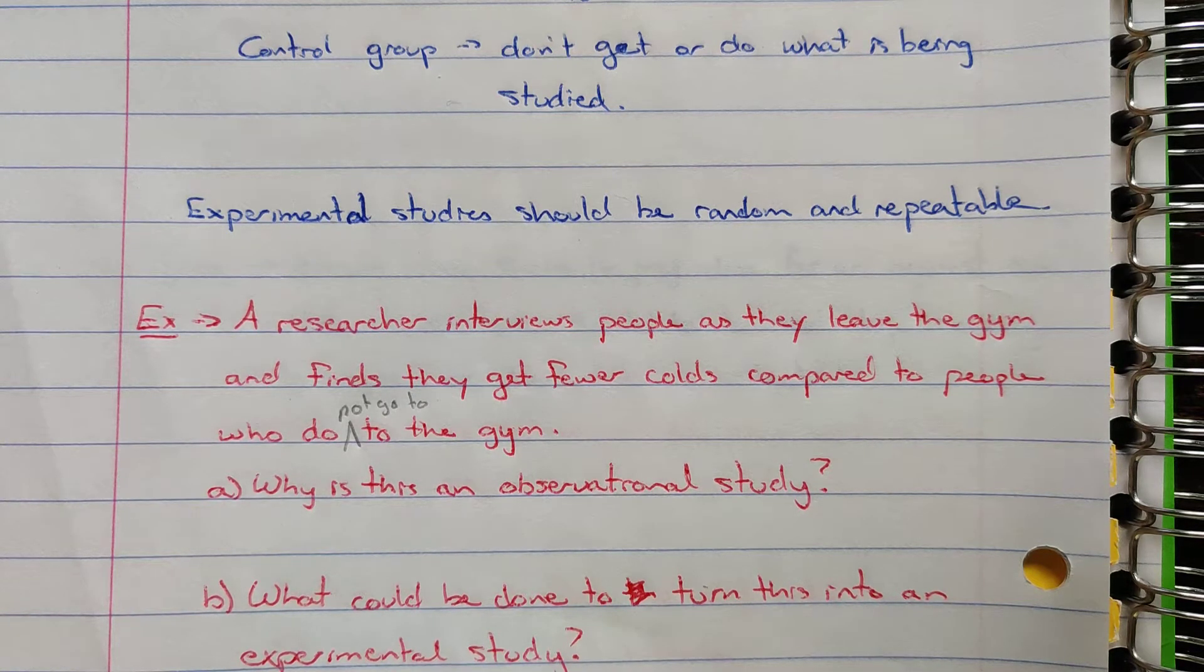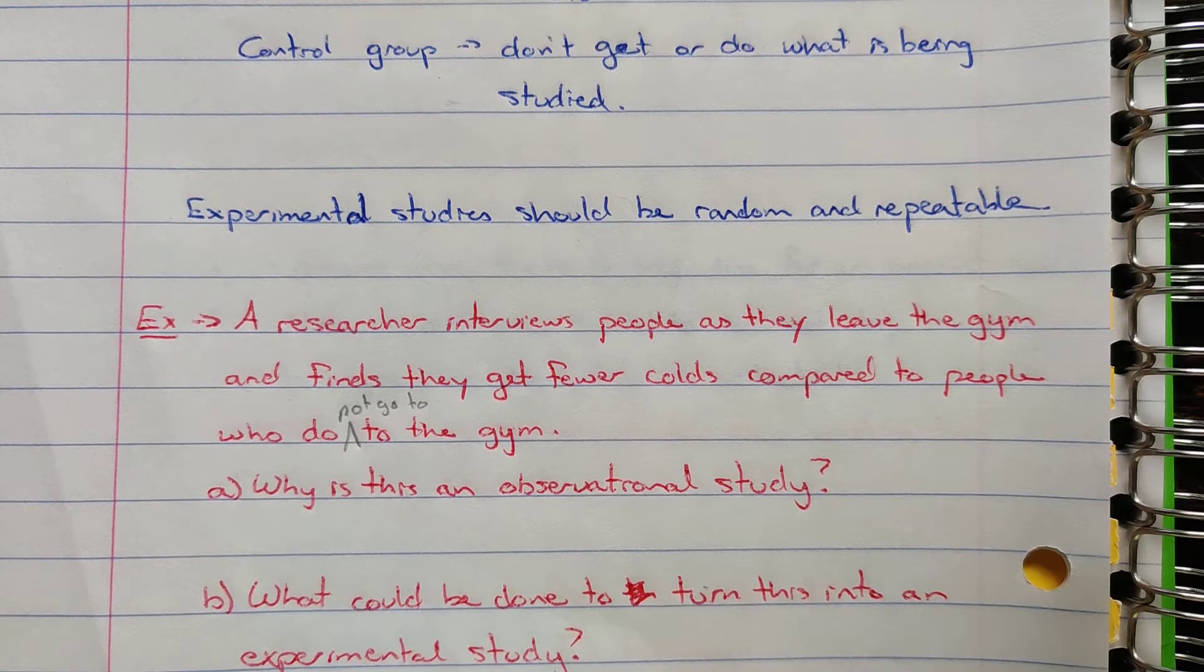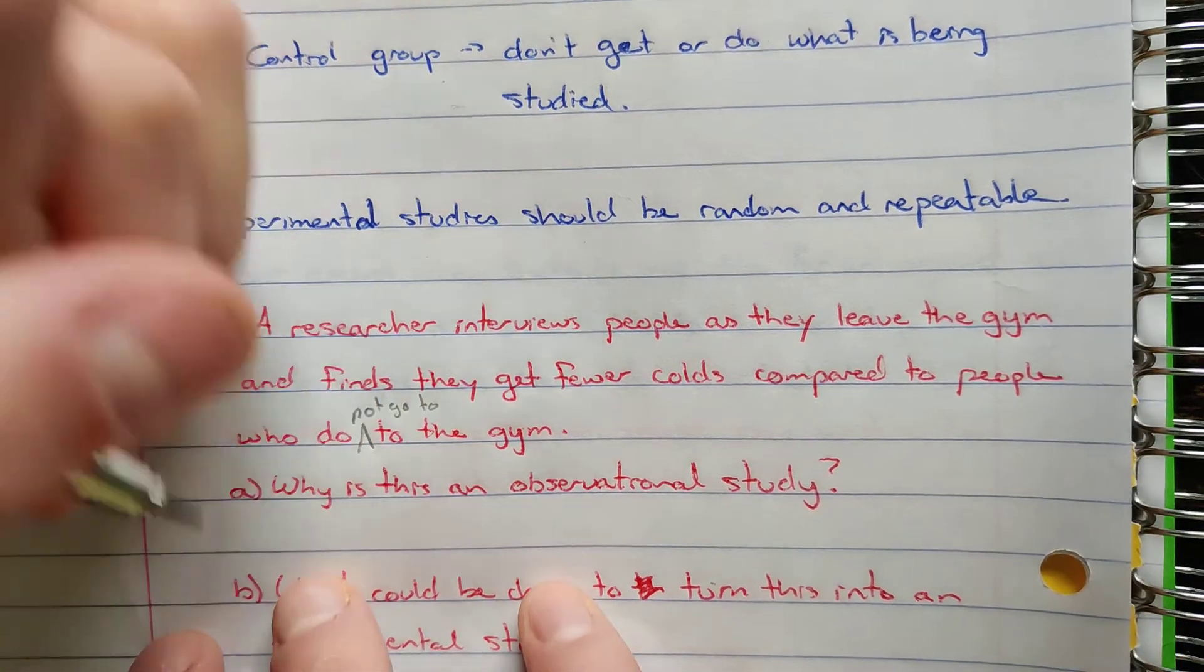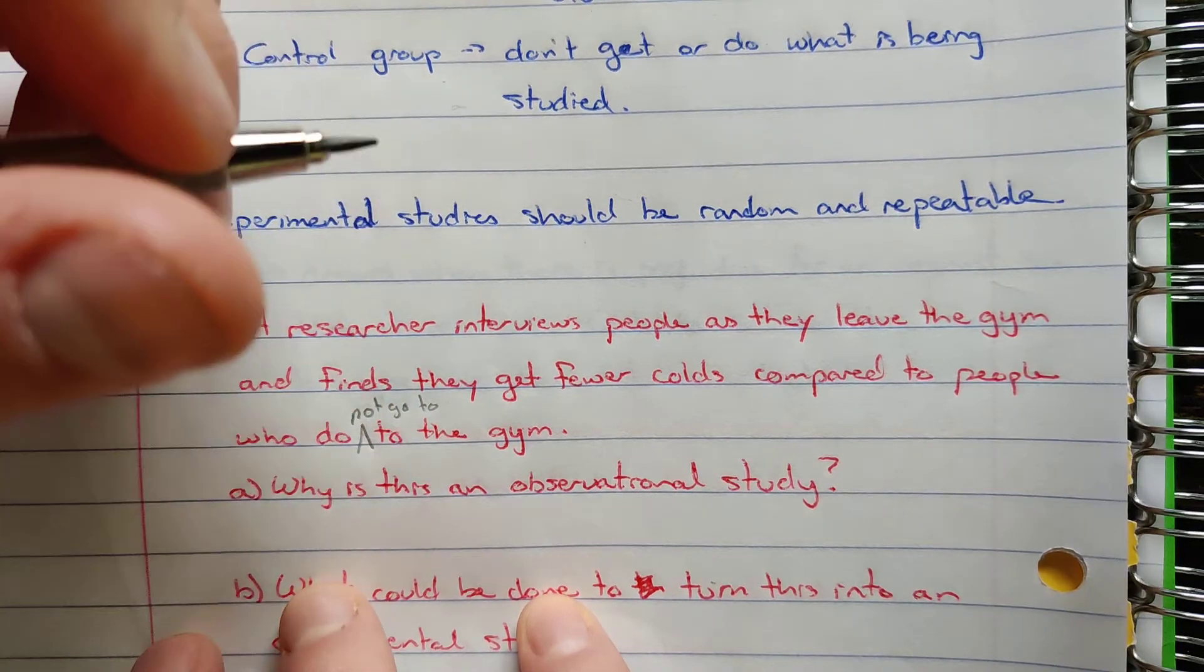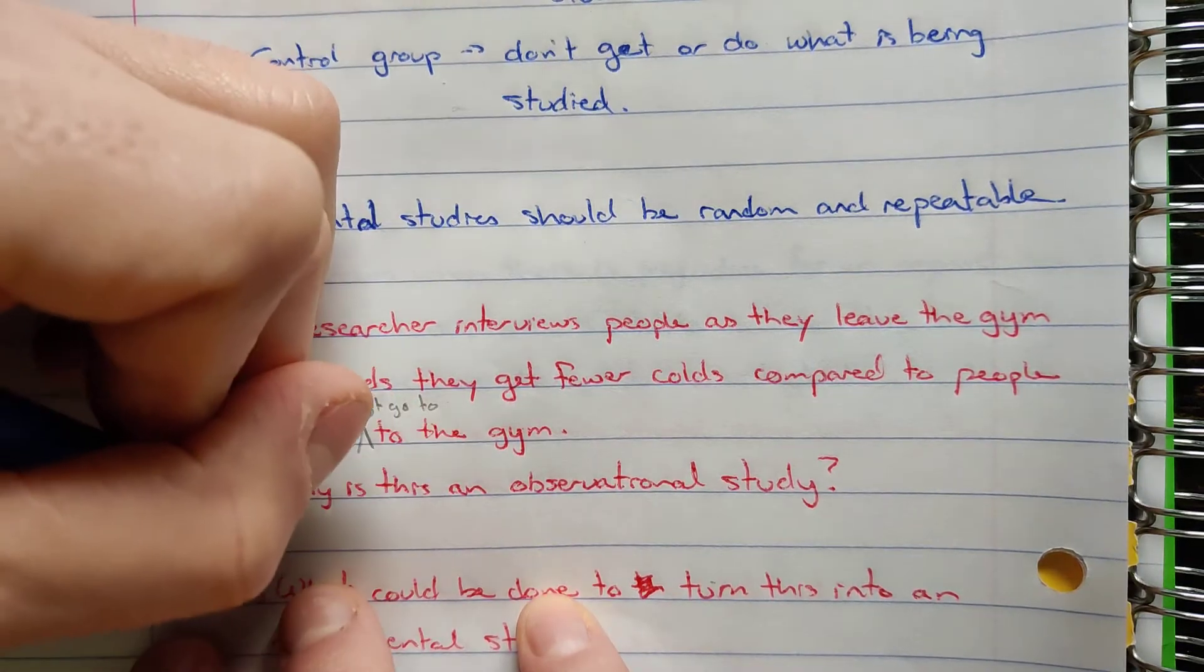Well, there's no control over the people that are part of this study in terms of the number of colds or anything like that, so it's just who happens to get a cold and who doesn't. We're not really randomizing our subjects because we're just picking people that are leaving the gym. So there's no real control here and thus it would be an observational study.